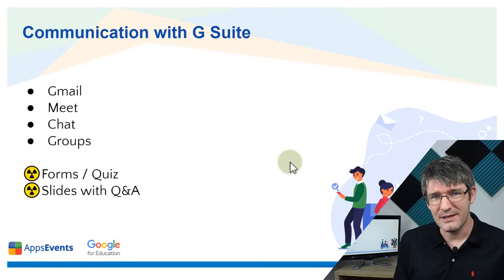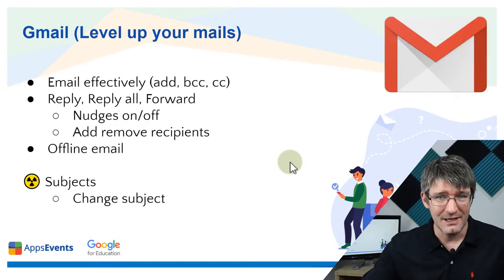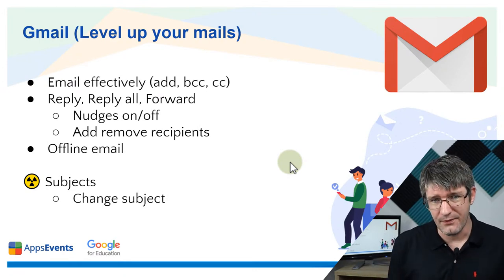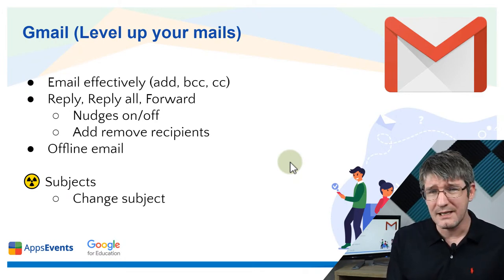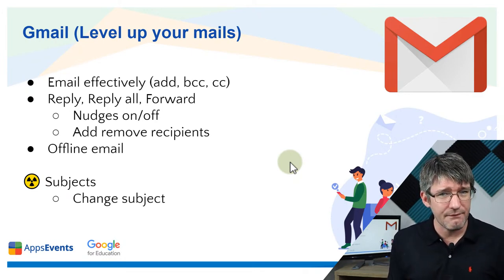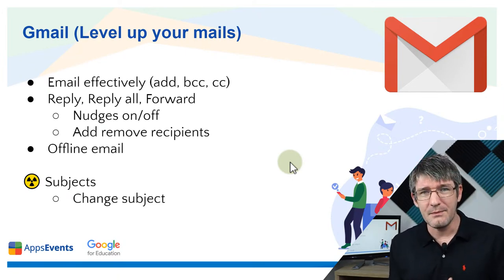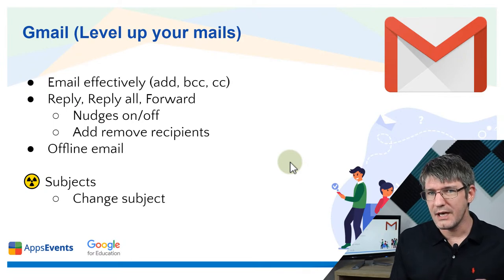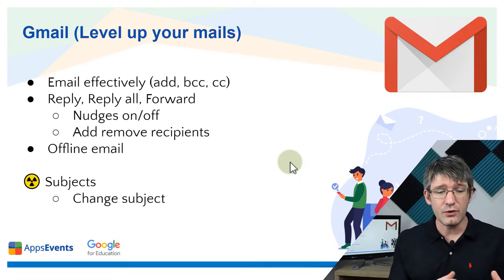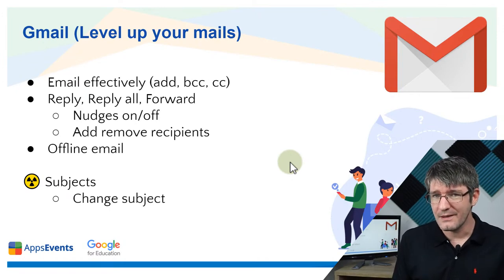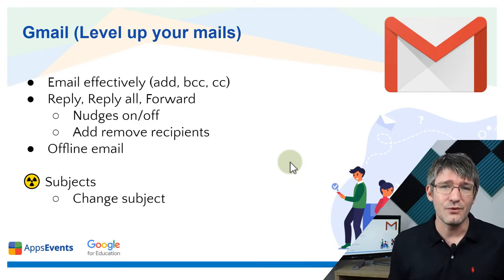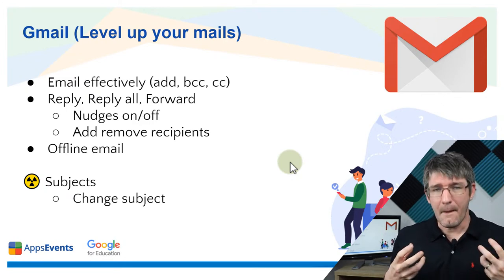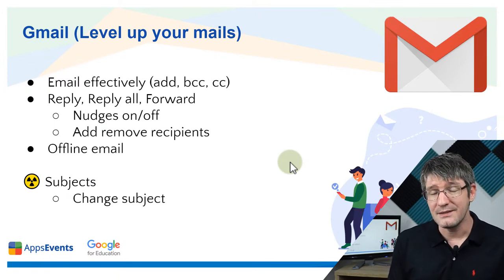Let's get started with Gmail. Within Gmail we can do a lot of different things. We're going to look at emailing efficiently and effectively, the difference between reply, reply all, and forwarding emails, and how you can add recipients and change the subject. Then we'll look at turning nudges on and off, offline email, and how we can make sure we don't lose any emails and continue our communication.